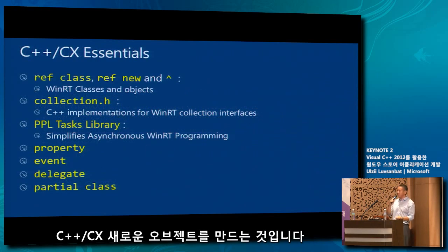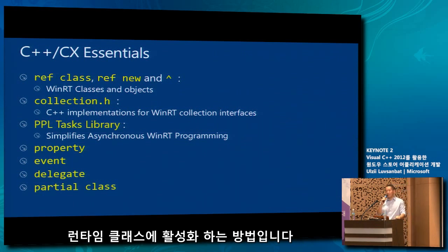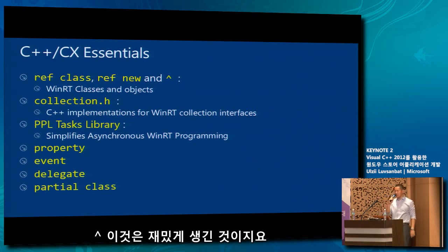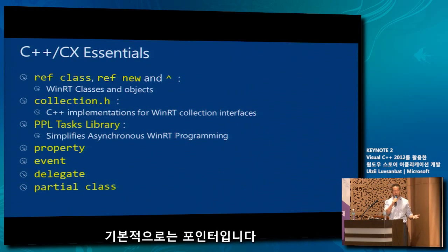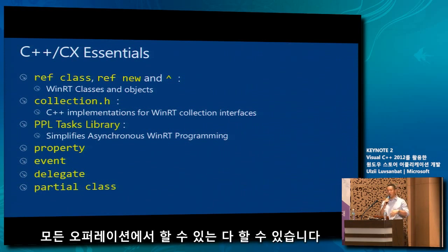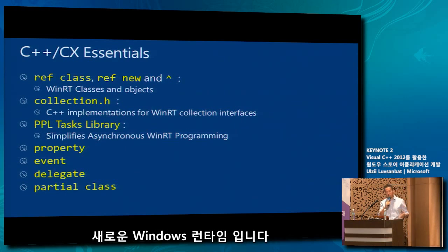Here are some essentials of the C++ CX extensions. Ref class is how you create a new runtime class. Ref new is how you create a new object — this is how you activate a runtime class. The hat operator — that funky-looking thing — is a pointer that is reference counted, but essentially it's a pointer and all operations allowed on a pointer are allowed. Collections.h is a header file that provides the implementations for collections provided by the new Windows 8 runtime.